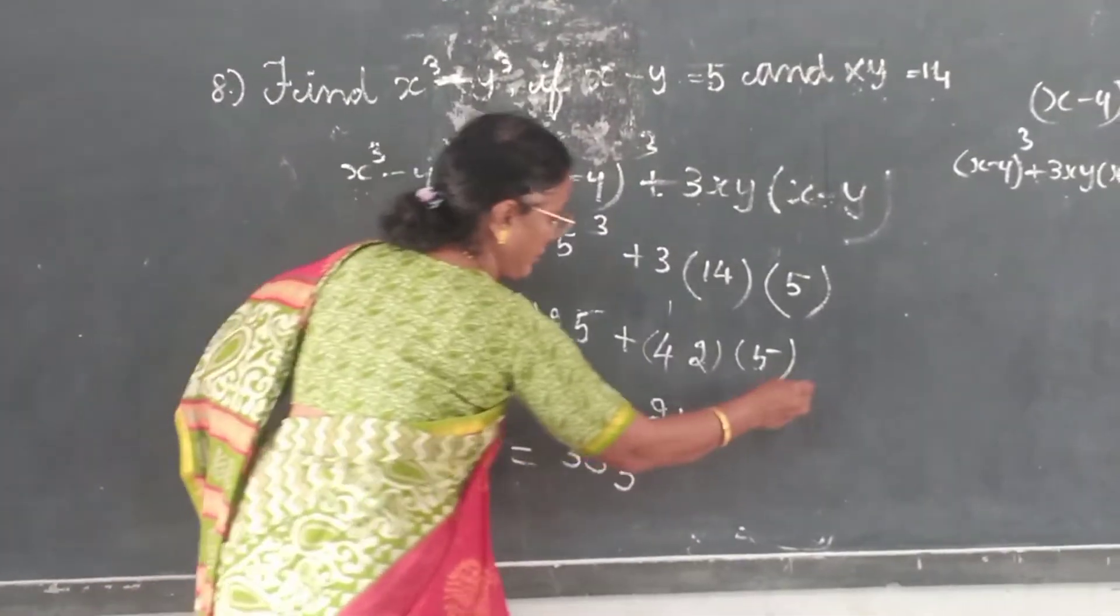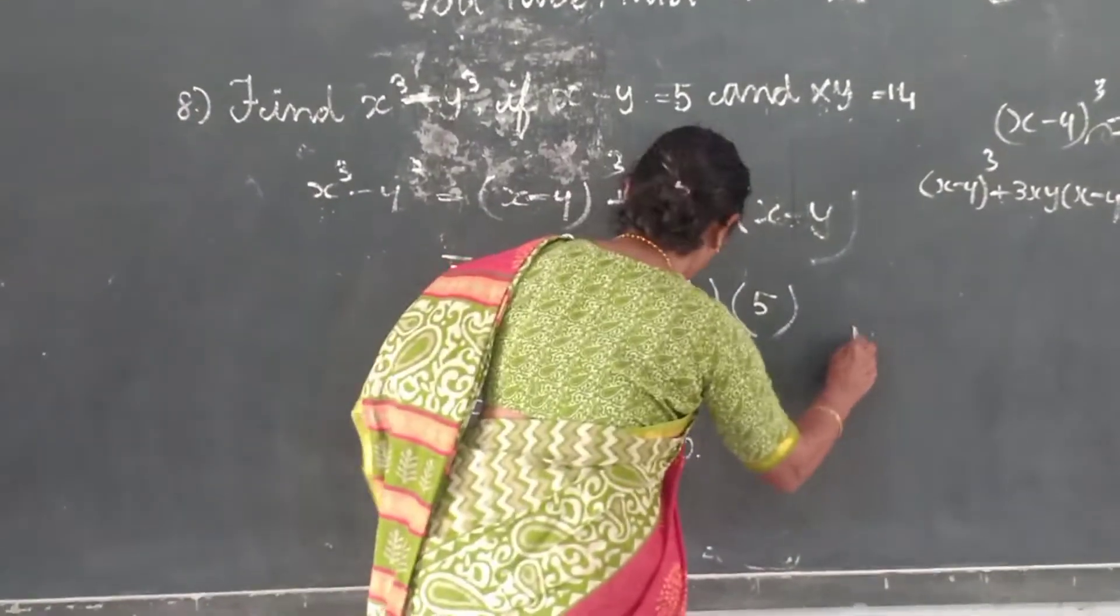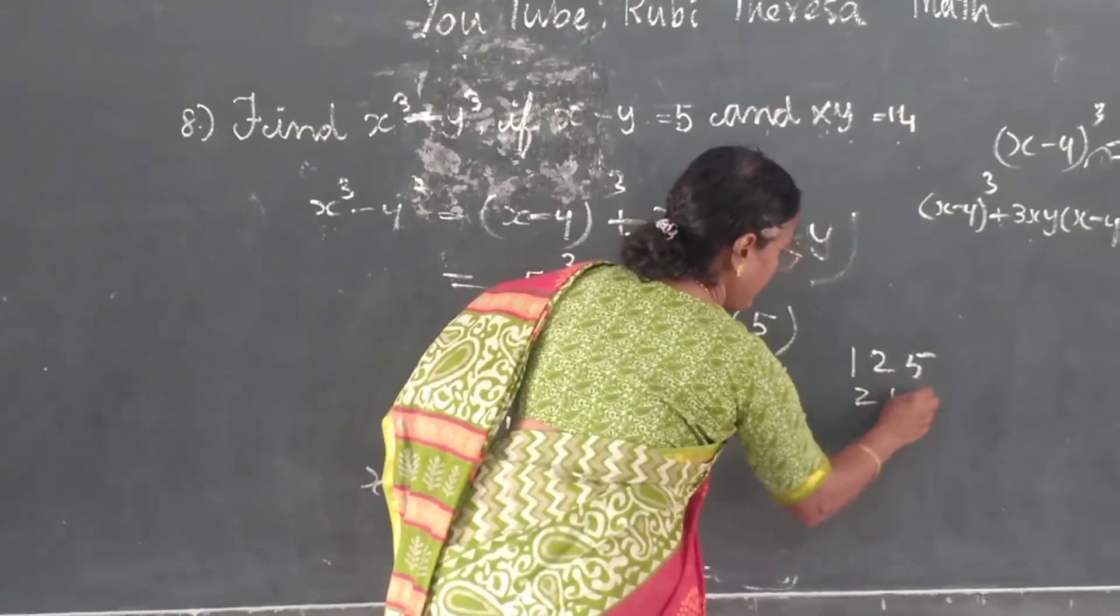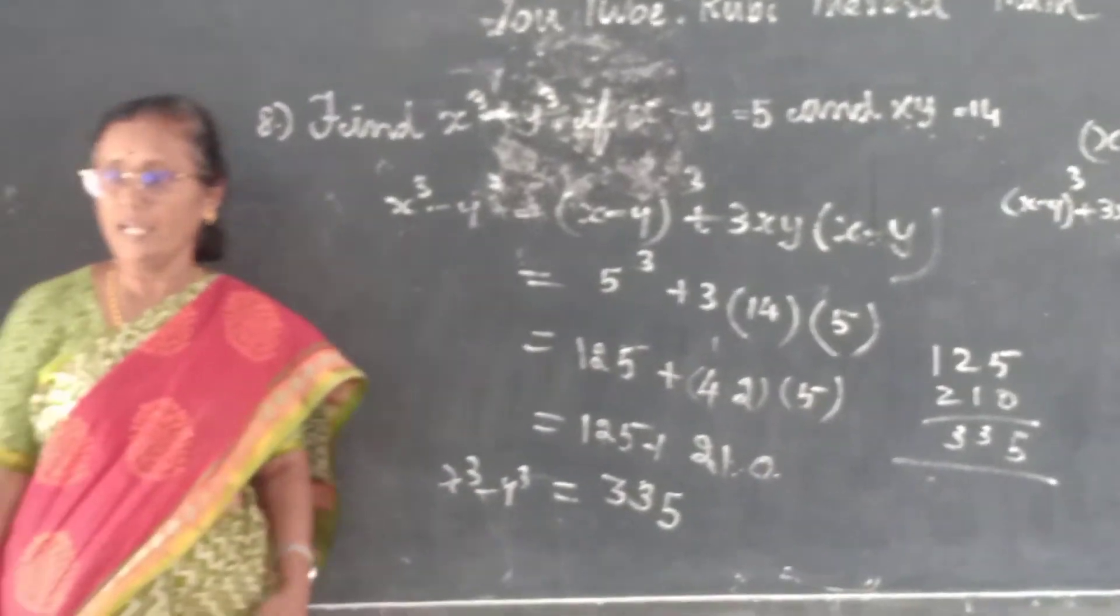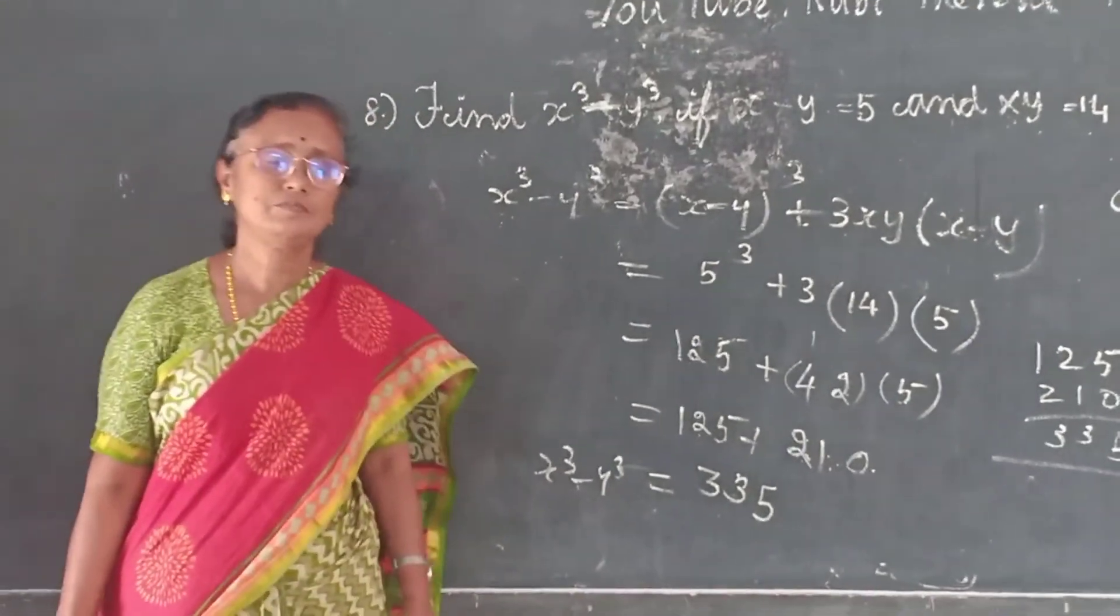So x³ minus y³ equals 335. Those who are unable to add it like this just get put it: 5, 3, 3. That's 335. Is it okay? Yes, ma'am. Thank you.